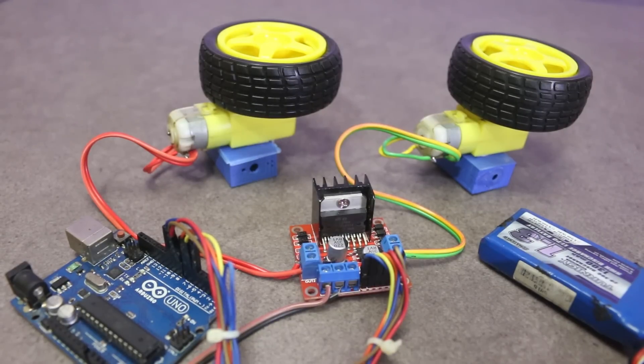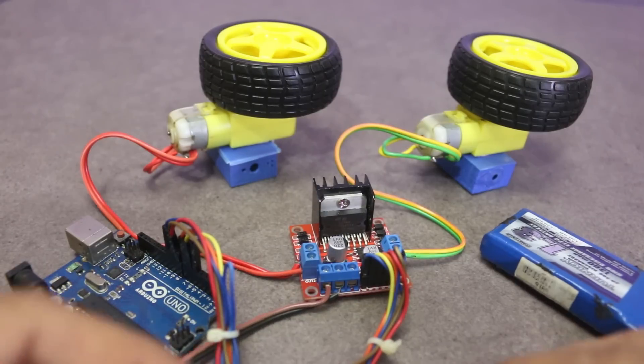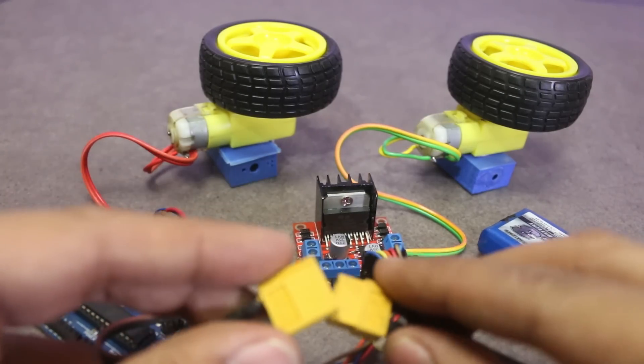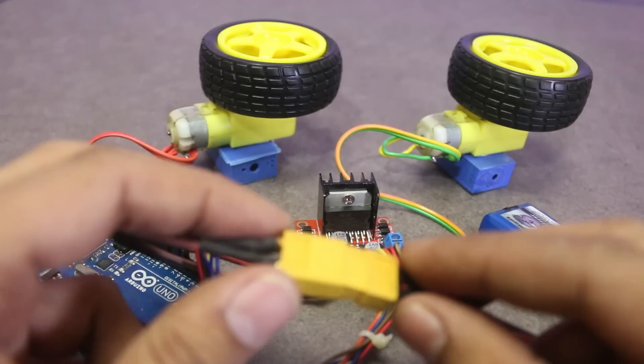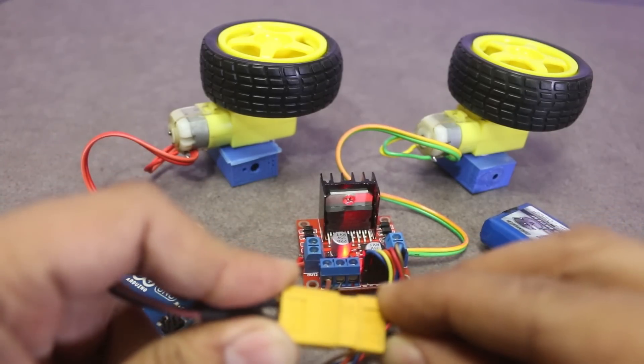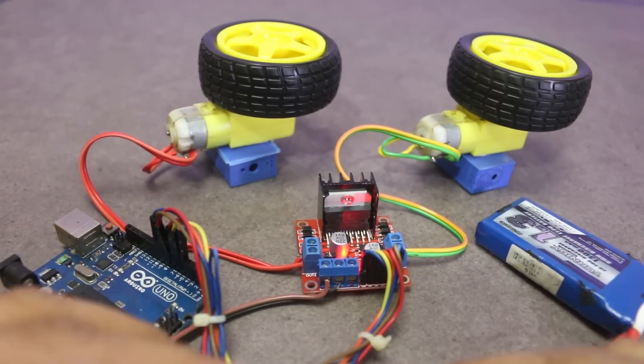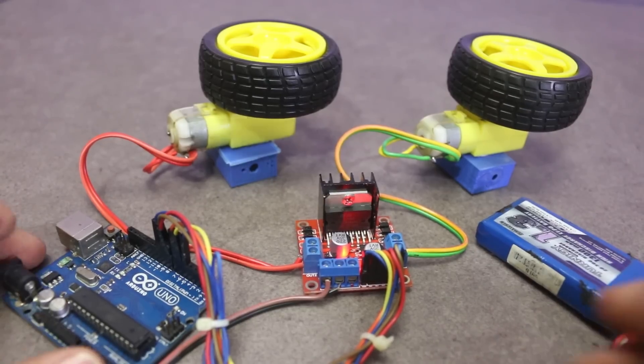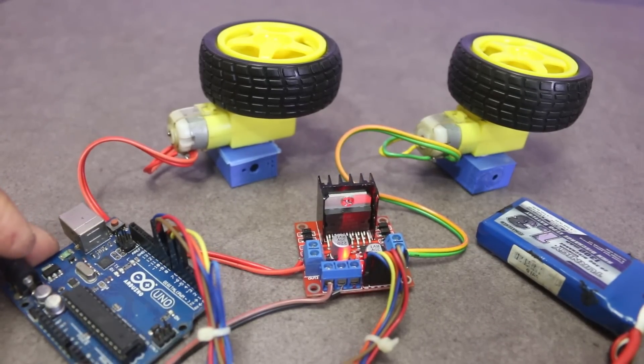All connections are done. Now upload the code into the Arduino. You can get the code from circuitmagic.com. I will leave a link in the description. Open your Arduino IDE and paste the code. Don't forget to select the right board and port from the tools menu.